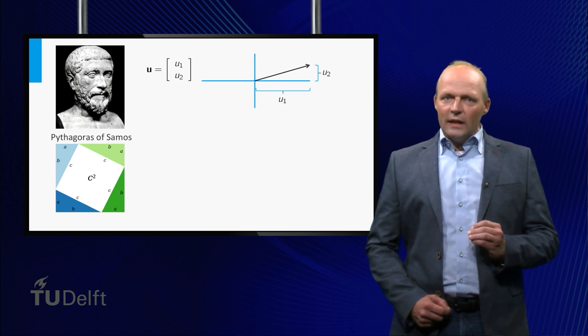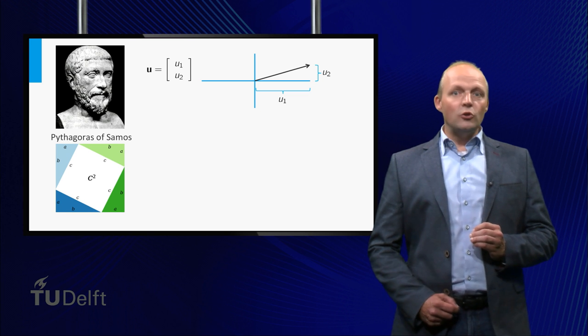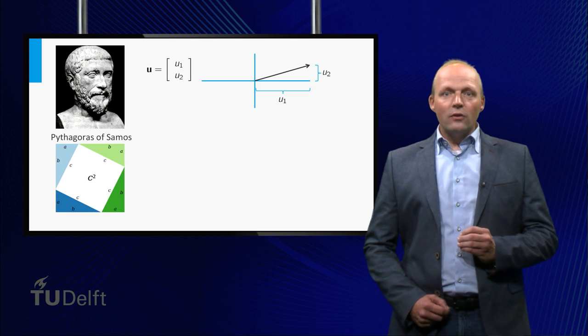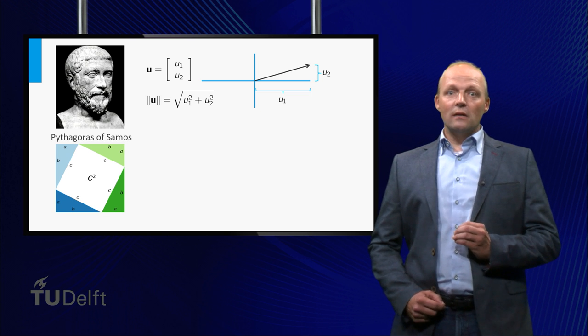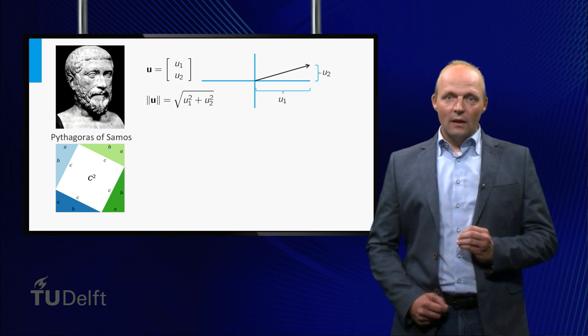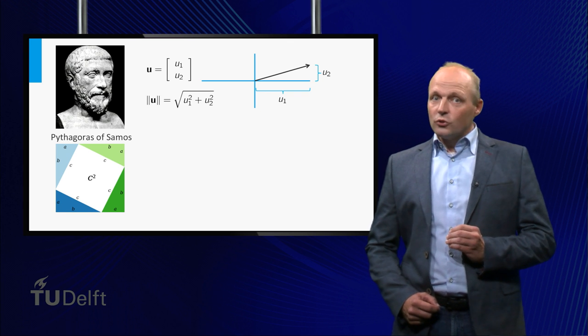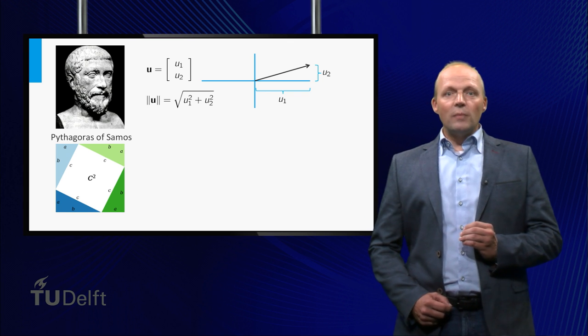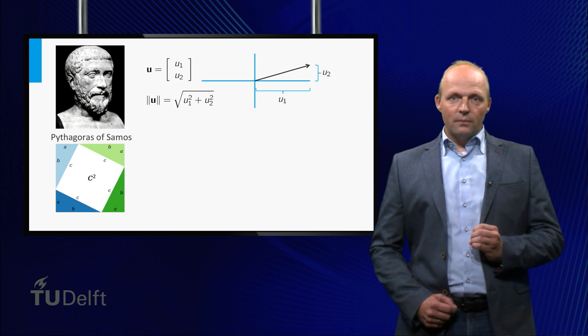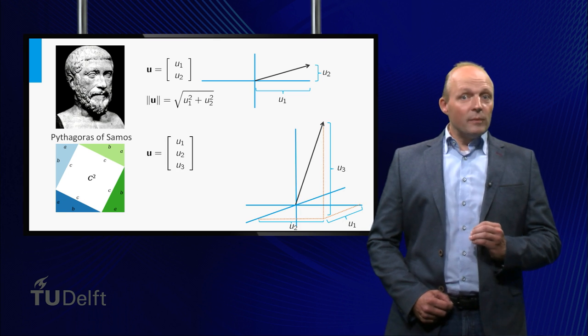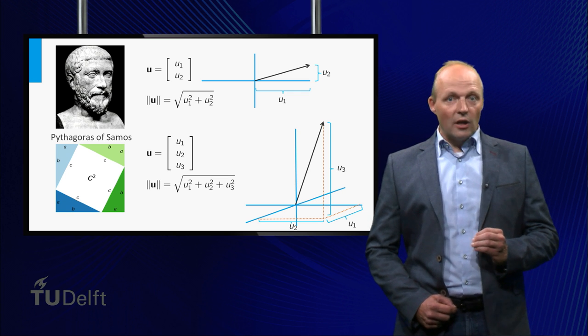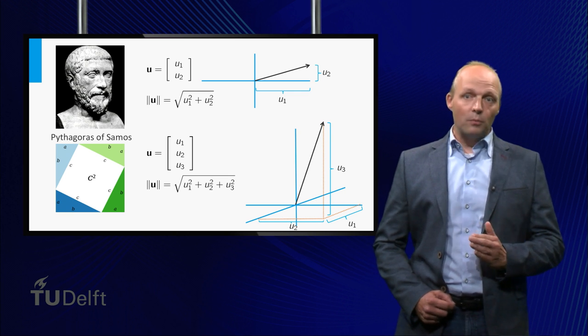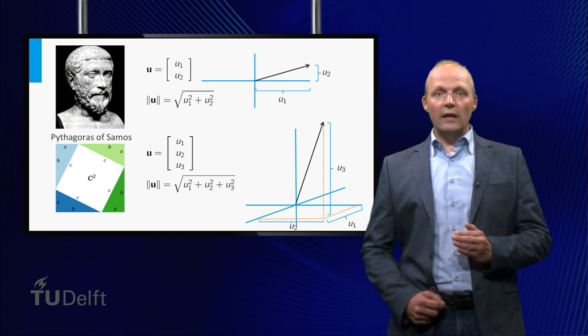Writing the vector u in two-dimensional space with components u1 and u2, the length of u is given by the square root of the sum of u1 squared and u2 squared. The length of a vector, also called its norm, is denoted by double absolute values. In three dimensions, the theorem is similar, and the length of u is given by the square root of the sum of squares of the three components u1, u2 and u3.